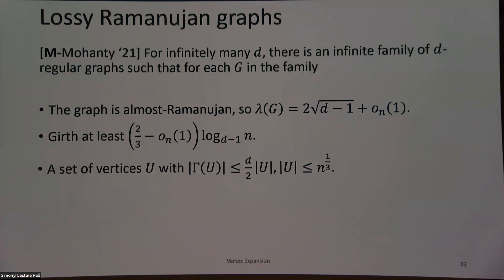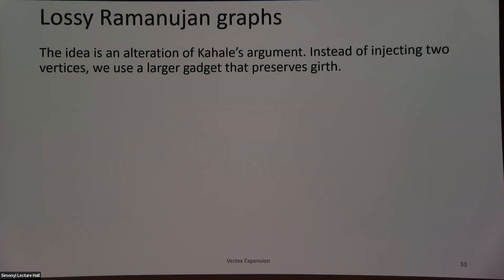What we're going to do is take the original Kahale argument and alter it a bit. Instead of injecting two vertices, we'll use a larger gadget that preserves both properties. Our first attempt was this construction of Alon, Ganguly, and Srivastava, who were trying to create localized eigenvectors for high-girth graphs. What they did: they took two trees, then matched the leaves of the trees in some way that preserves girth. This creates a gadget with lossy vertex expansion and localized eigenvectors, but it doesn't preserve the Ramanujan spectral gap — their paper shows there exists a constant C such that the second eigenvalue is bounded away from 2√(D−1) by C.